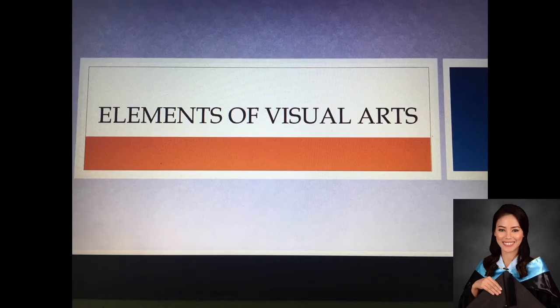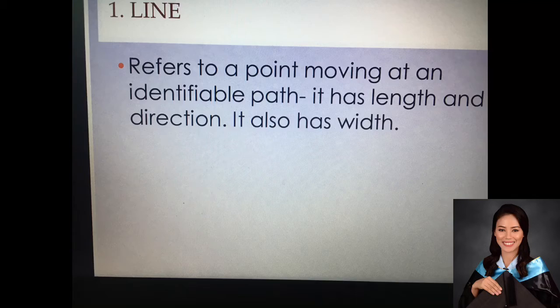So to enumerate the elements of art and design, here are the following: we have the line, the shape, the form, the space, color, and texture. First, let's have the line.